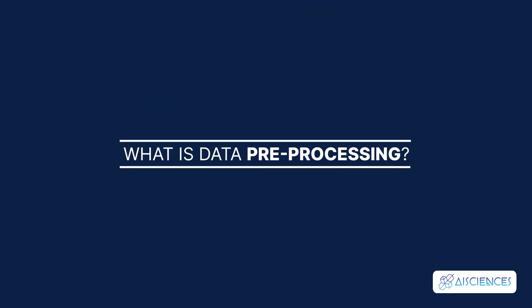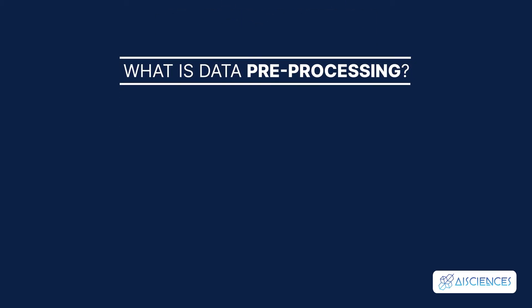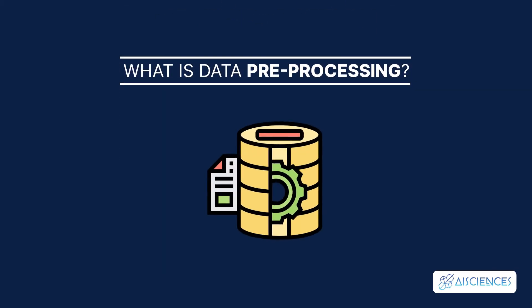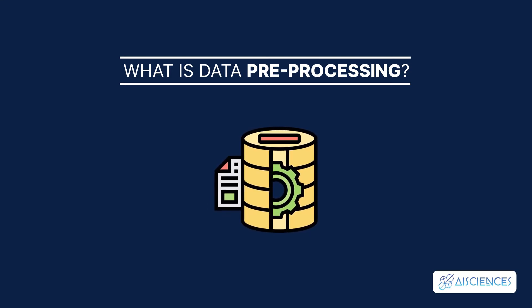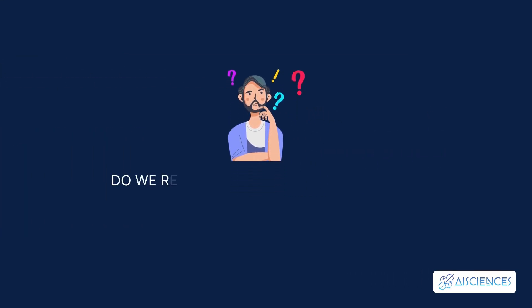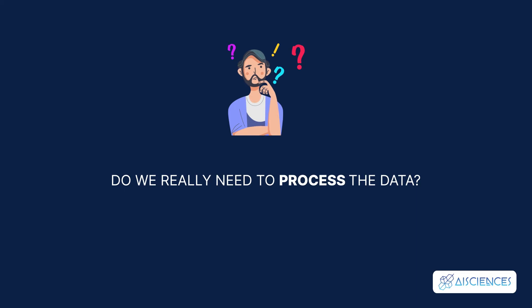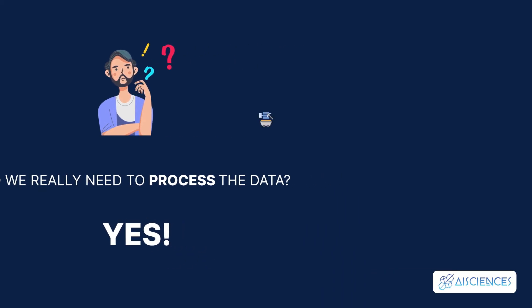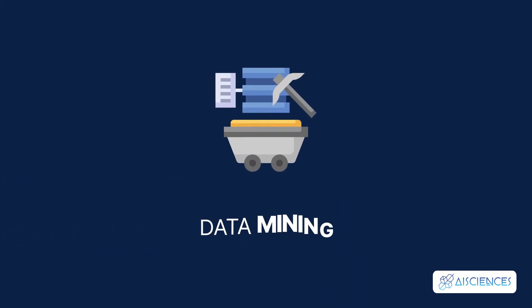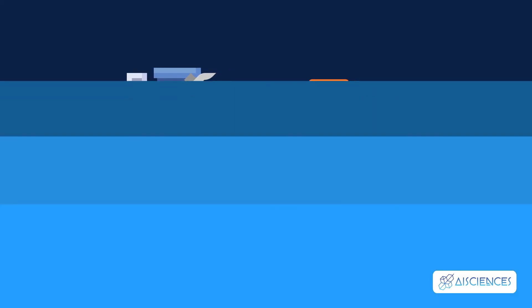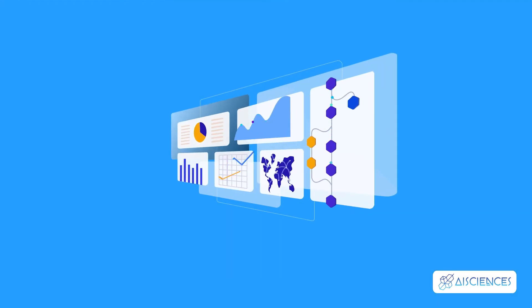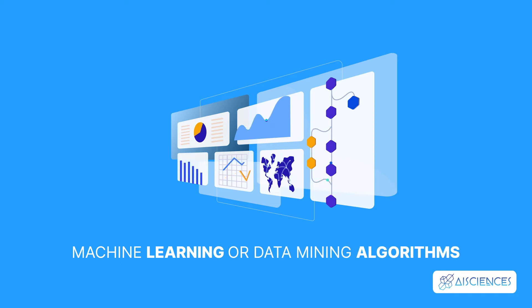What is Data Pre-Processing? Data Pre-Processing is the process of transforming raw data into an understandable format. You must be thinking, do we really need to process the data? Yes. It is also an important step in data mining as we cannot work with raw data. The quality of the data should be checked before applying machine learning or data mining algorithms.